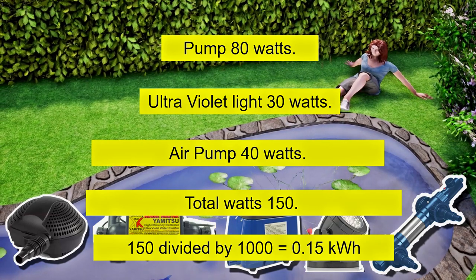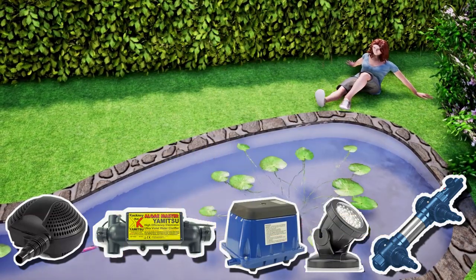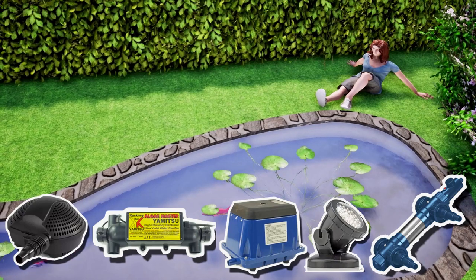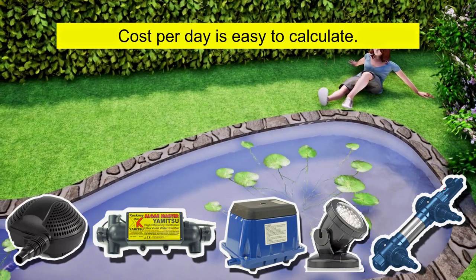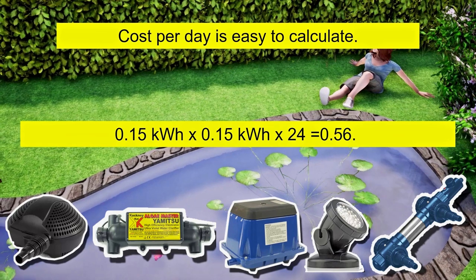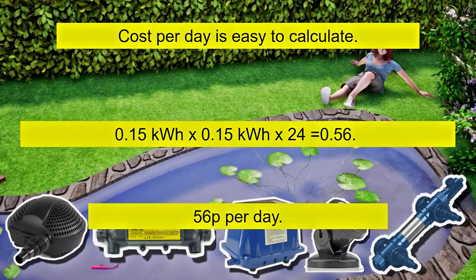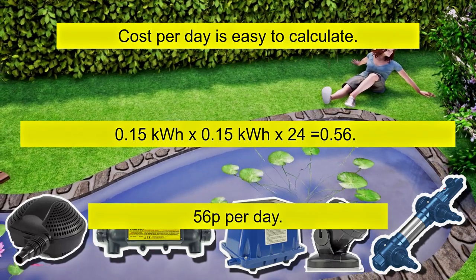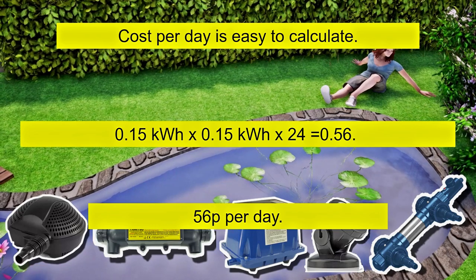So how much is this per day? Simple. Multiply your result by the cost per kilowatt hour, then multiply it by 24 to get a daily rate. In this case the result is 56p per day.